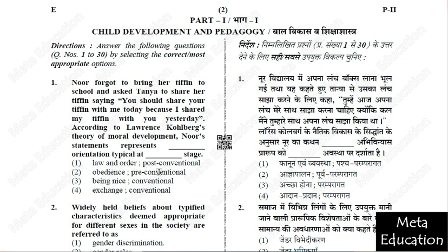The options are: 1) Law and order — post-conventional; 2) Obedience — pre-conventional; 3) Being nice — conventional; 4) Exchange — conventional.